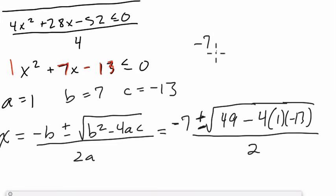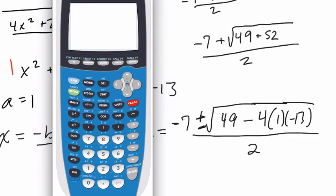What I'm entering in the calculator is negative 7 plus the square root of 49. This is really negative 4. You can think of it as 4 times 1 times negative 13. And then we're subtracting that. So that's going to be a positive 52 over 2. 49 plus 52 is 101. Over 2. So we're going to enter this in the calculator.